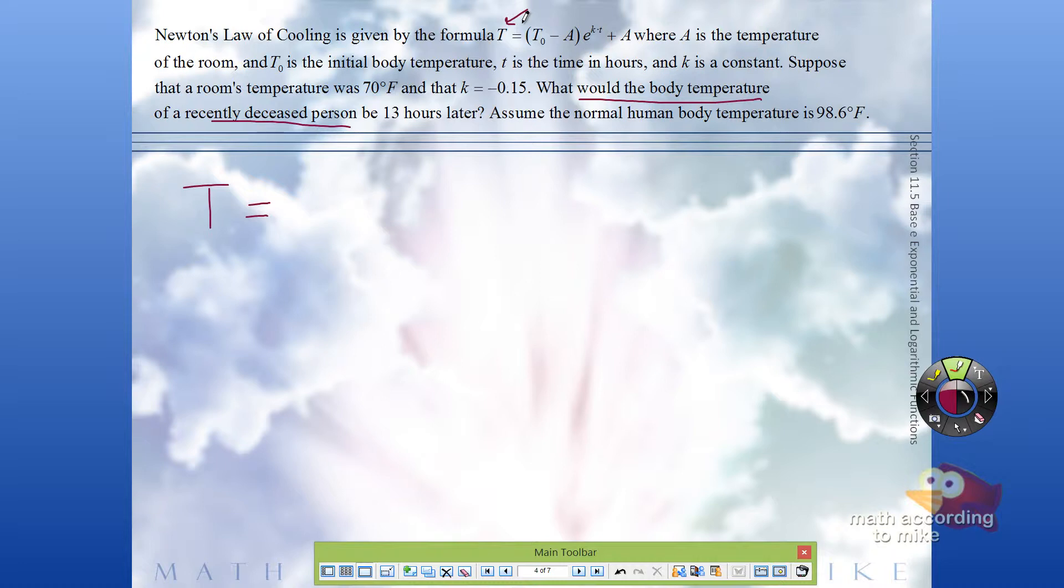So T naught is the initial body temperature. The initial body temperature we're told is 98.6 minus the ambient temperature of the room, which we're told is 70 degrees.